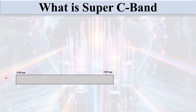This is called the standard C band, ranging from 1530 nanometers to 1565 nanometers, with a total 4 terahertz spectrum. So in the standard C band we have a total of 4 terahertz of spectrum.